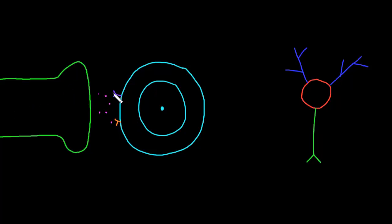This axon terminal might be releasing a neurotransmitter at the synapse, and perhaps when it binds to the purple receptor that causes an excitatory potential in the target cell, but if it binds to the orange receptor on the postsynaptic membrane, that would cause inhibition of the target cell — an inhibitory potential. When the target cell is another neuron,